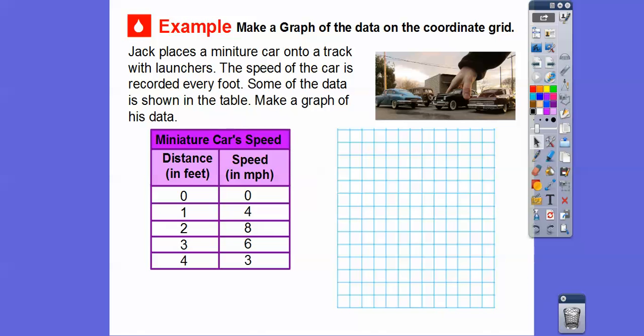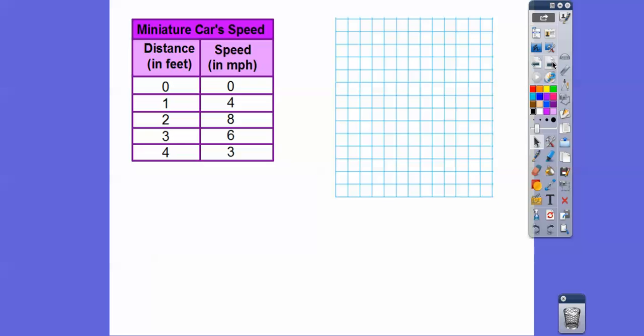Imagine he shoots these cars and these launchers and they start off really fast and then they start slowing down and sooner or later it's going to come to a stop. So the speed will be at zero again. First thing we've got to do is make our axes, our x and y axes. Always, the horizontal is our x axis and the vertical is our y axis. Remember, x comes before y in the alphabet. So these will represent our x numbers. These will represent our y numbers.